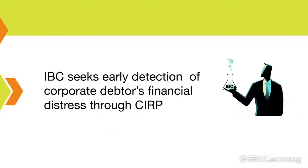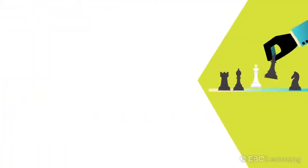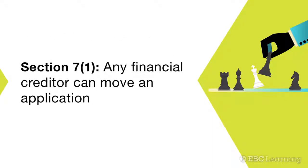The Insolvency and Bankruptcy Code seeks to increase the likelihood of a corporate debtor's financial distress being detected earlier. The core aim is to enhance the chances of resolving corporate insolvency. Keeping this objective in mind, Subsection 1 of Section 7 provides that any financial creditor can move an application before the adjudicating authority in respect of any financial debt.